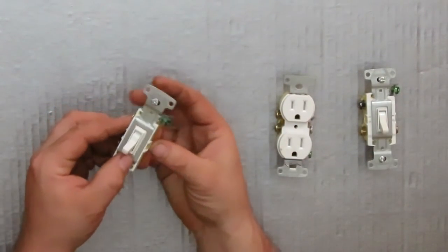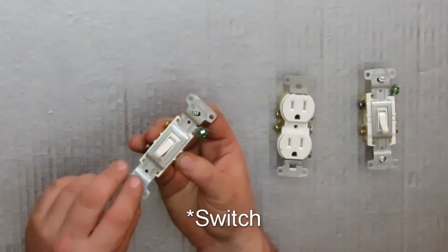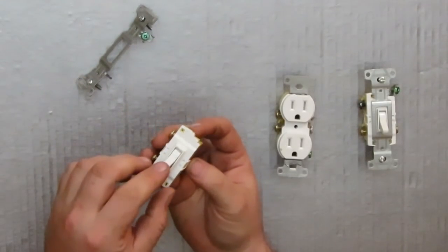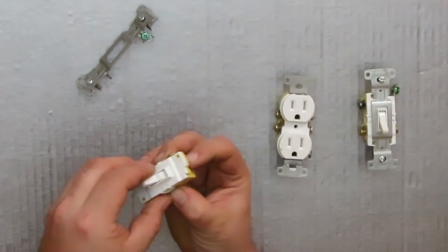First off, we're going to start with our single pole receptacle and we need to take off the grounding plate. We're left with the switch and inside.